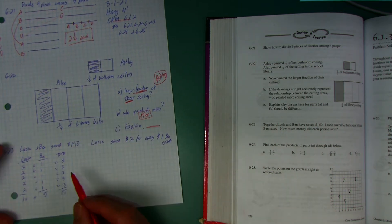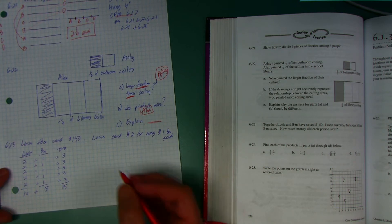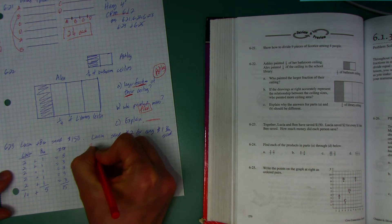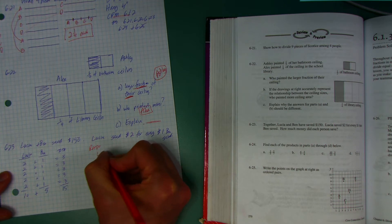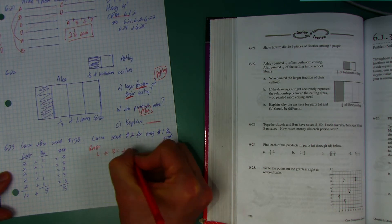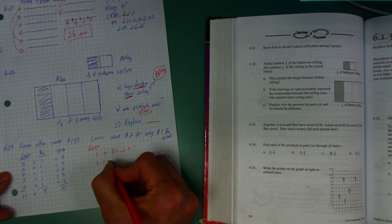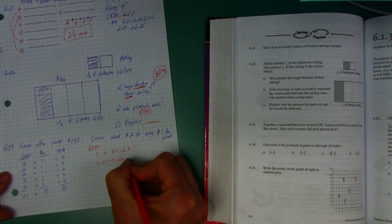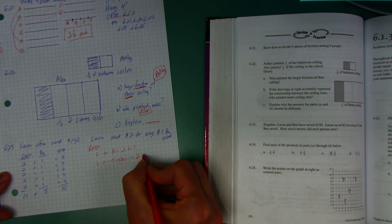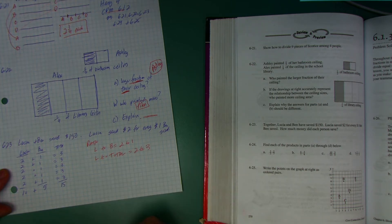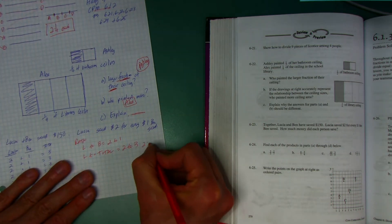All right, as far as Lucia saved two dollars for every one dollar, we can have ratios. The ratio of Lucia to Ben is 2 to 1. But how about Lucia to the total? You can see that's 2 to 3.